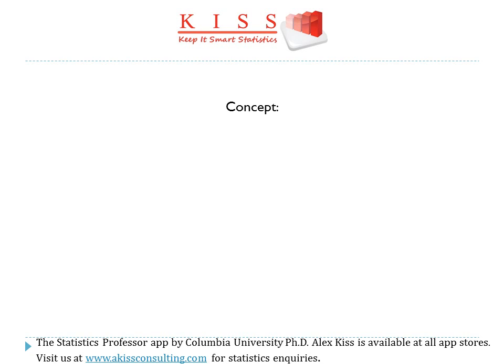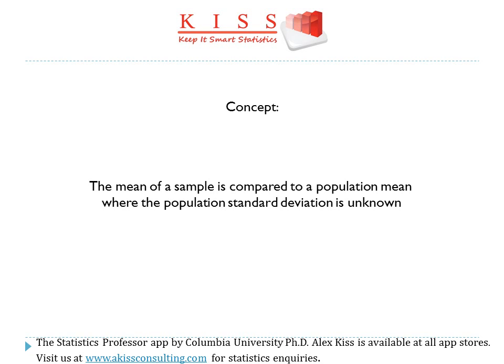The concept behind a one sample t-test is that the mean of a sample is compared to a population mean where the population standard deviation is unknown. This last part — the population standard deviation being unknown — is a key identifier for this test, as it distinguishes it from a one sample z-test in which the population standard deviation is known.